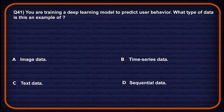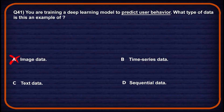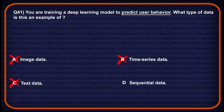Let's move on to question number 41: you are training a deep learning model to predict user behavior. What type of data is this an example of? Option A: image data — used for visual tasks, not behavior prediction, so wrong. Option B: time series data — assumes regular intervals which user behavior may not follow, so wrong. Option C: text data — applies to NLP tasks, not general user interaction modeling, so wrong. Option D: sequential data — user behavior unfolds as a sequence of actions over time, so option D will be the correct one.